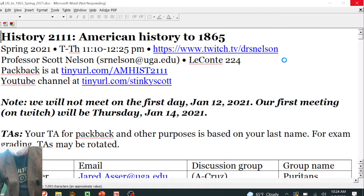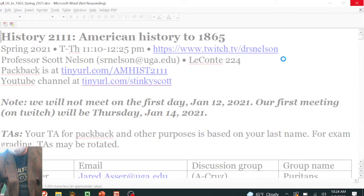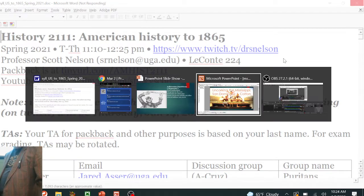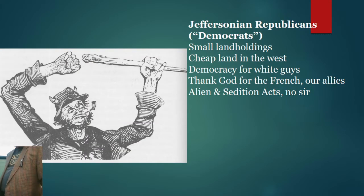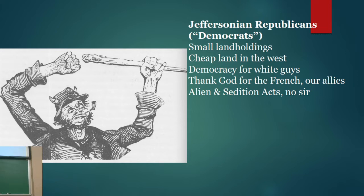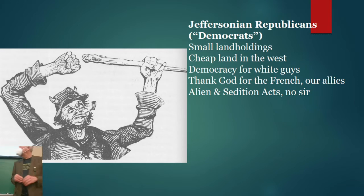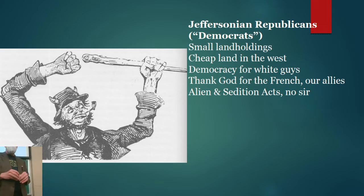Where can I access Oceans of Grain? The book Oceans of Grain is at Amazon. It's also, I think, at the Five Points bookstore—Avid bookstore—and it should be available from Basic Books as well.